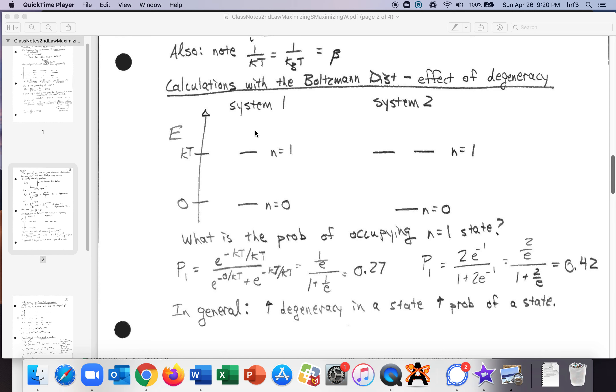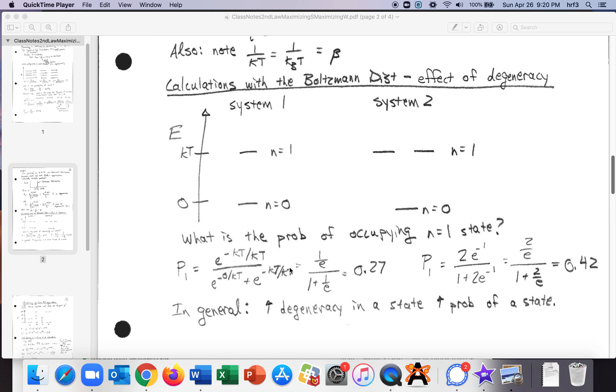All right but anyway what's the probability of occupying the first excited state for a particle according to the Boltzmann distribution? P for system one and the first excited state would be e to the negative so this energy is kt divided by kt divided by the sum over the states so you've got just two states here zero and kt so that's one over e divided by one plus one over e that's 0.27 so 27 percent probability of being in the excited state.